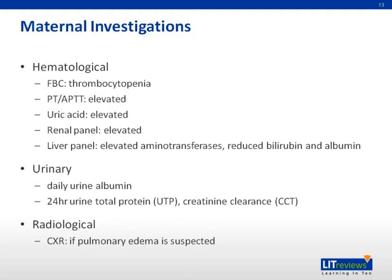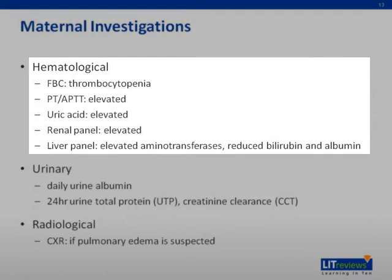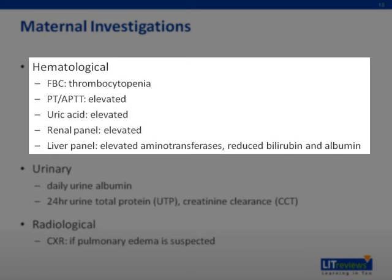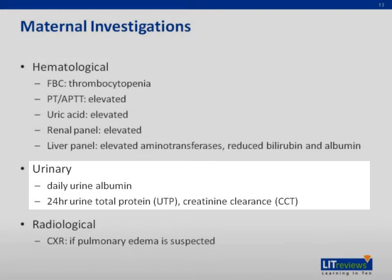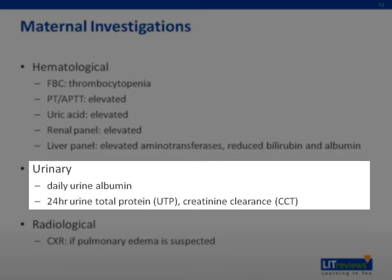Investigations may be divided into hematological, urinary, and radiological. Hematological investigations include full blood count, clotting panel including PT and APTT, uric acid, liver function test, and renal panel. Urinary investigations include daily urine albumin, 24-hour urine total protein, creatinine clearance test, and urine protein creatinine ratio.